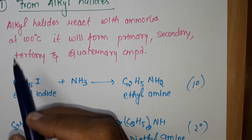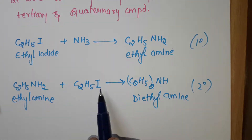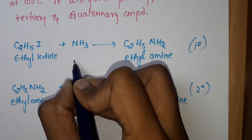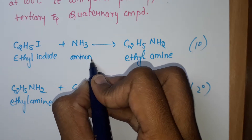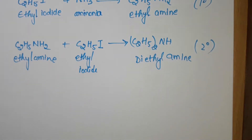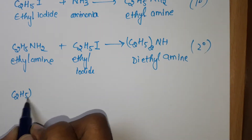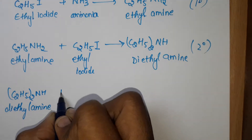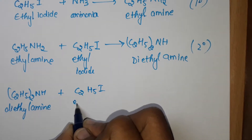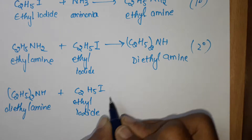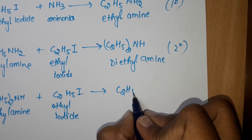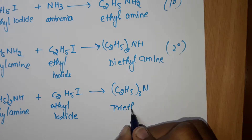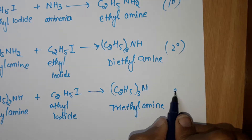So what I told you: alkyl halide reacts with ammonia, giving ethyl iodide reacting with ammonia. Now this diethylamine — (C2H5)2NH — again reacts with alkyl halide, meaning ethyl iodide, and it will yield three molecules of C2H5 with N — that is triethylamine. This is a tertiary amine.